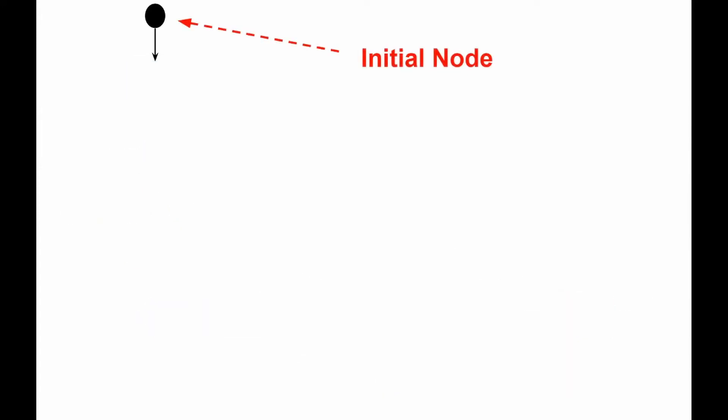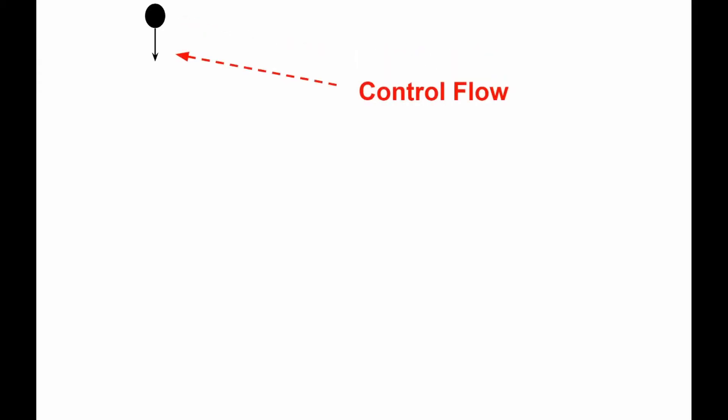Initial node: it starts the flow when the activity is called from the outside. Control flow: it shows the sequence of execution or flow.